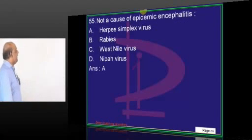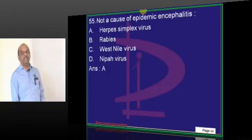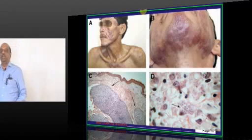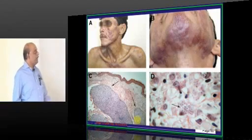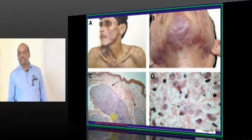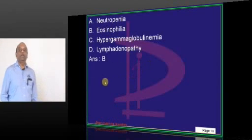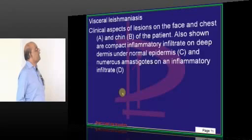Epidemic encephalitis is not caused by herpes, but by rabies, West Nile virus, Nipah virus, etc. A 36-year-old being shown with cutaneous lesions and Leishmania amastigote forms in culture is a classical case of visceral leishmaniasis, which can lead to neutropenia, hypergammaglobulinemia, and lymphadenopathy — these are all associated features.